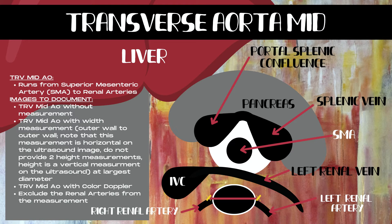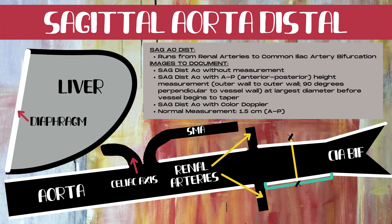Moving more inferiorly to the sagittal aorta distal, which runs from the renal arteries to the common iliac artery bifurcation. First, sweep medially and laterally through the aorta looking for dissections or pathology. Then take a sagittal distal aorta without measurement, a sagittal distal aorta with an AP or height measurement — outer wall to outer wall, 90 degrees perpendicular, at the largest diameter just before the vessel begins to taper toward the common iliac bifurcation — and a sagittal distal aorta with color Doppler. A normal measurement for the distal sagittal aorta is 1.5 centimeters in the AP dimension.